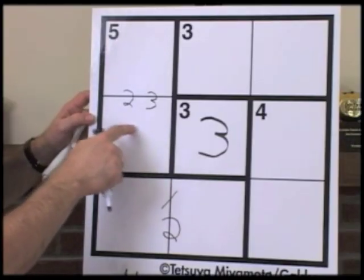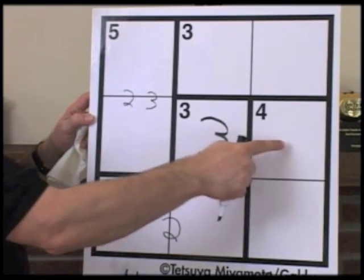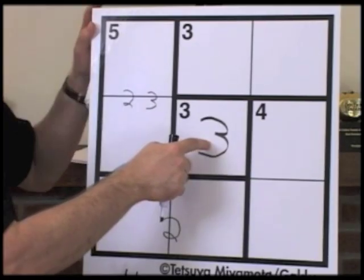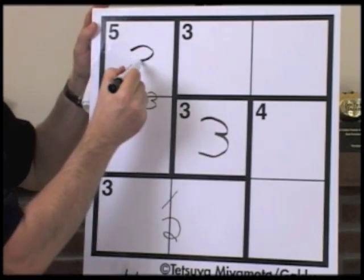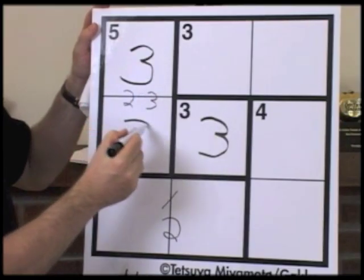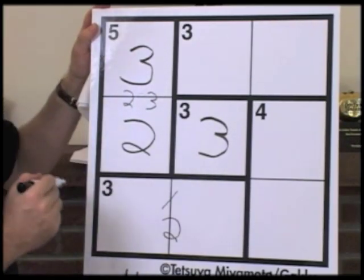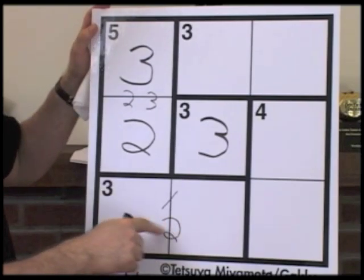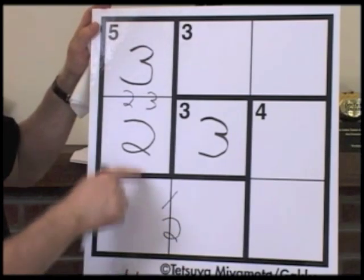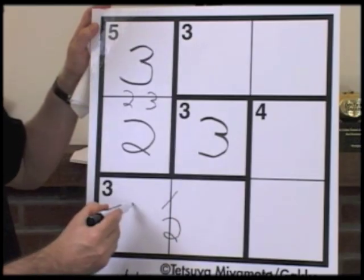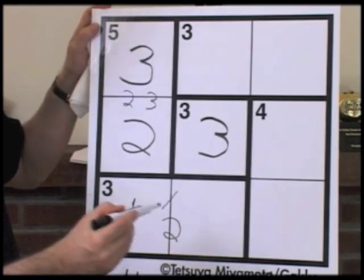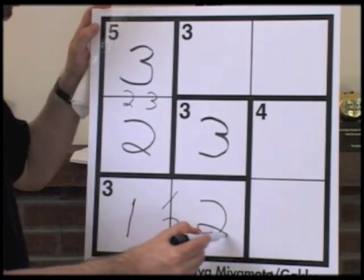We know, however, that the 3 doesn't go here because it would repeat the 3 that we've already filled in the grid, so instead it has to go here, and the 2 by elimination must go here. Again, down here, the 2 can't go in this square because we already have a 2 in this column, so the 1 has to go here. The 2 must go here.